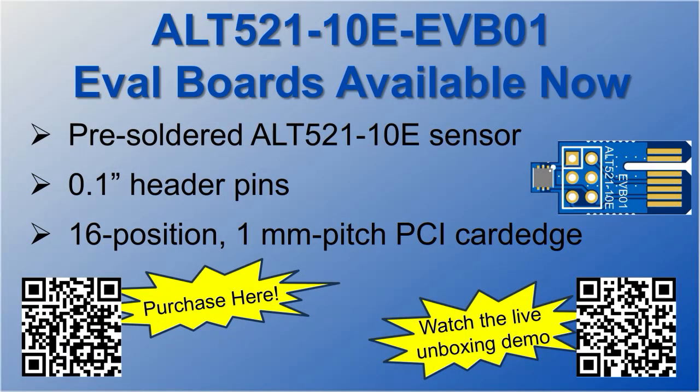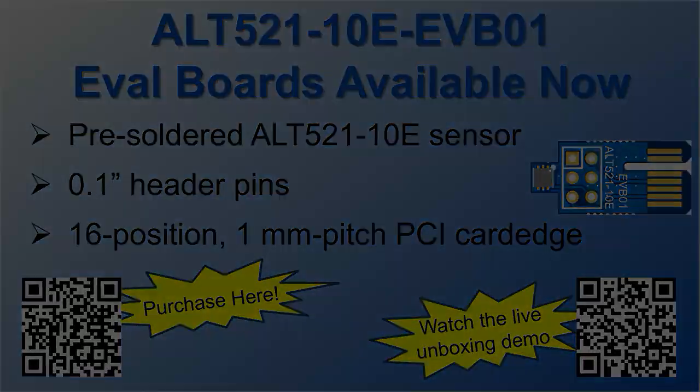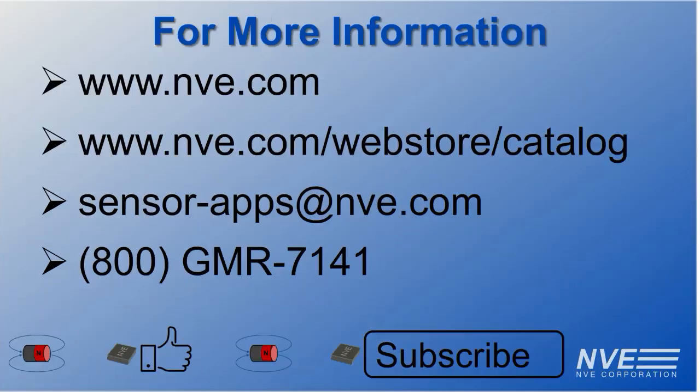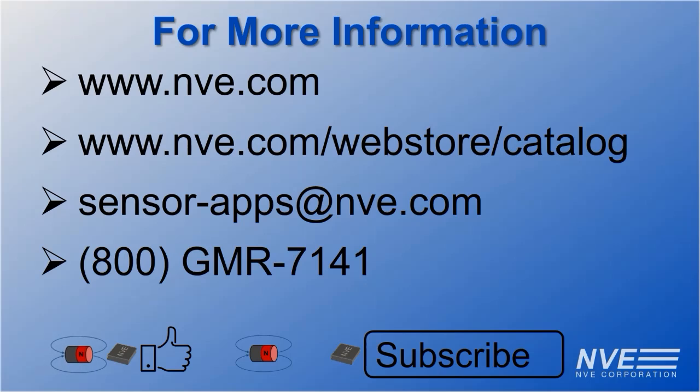Evaluation boards for the new sensors are available now. Check our links to buy them today or to view an unboxing demonstration. Key features of our new ALT521-10E TMR rotation sensors include high sensitivity, high resolution and low noise, tiny package size and wide operating temperature range. Let us know more about your application by email or call. Like the video if you enjoyed it and subscribe to the NVE Corporation YouTube channel for more product demonstrations.